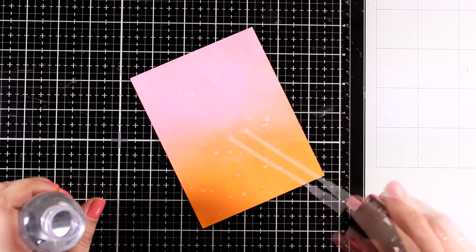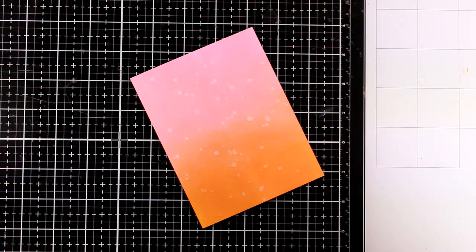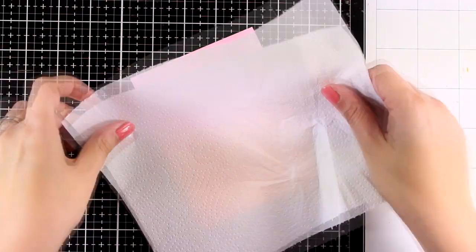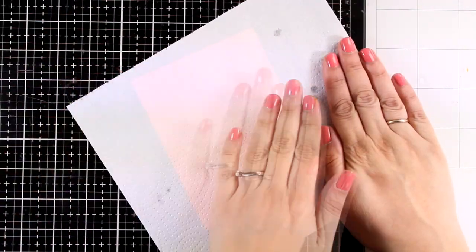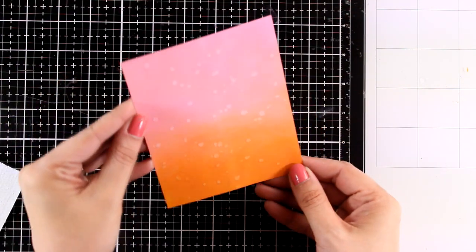If you like it as it is, you can use it and just stick your focal point on top and your sentiment. I decided to go with some water splashes. I leave them for a few seconds to react with the ink and then I'm going to use a paper towel. This is going to lift some of the color for a very interesting background.